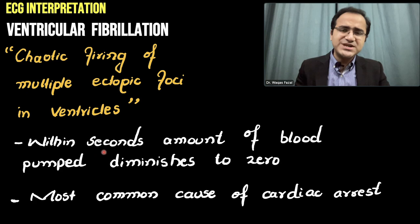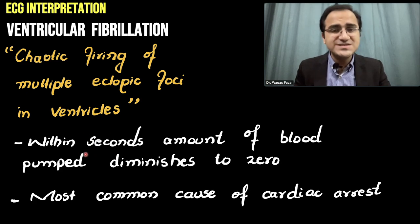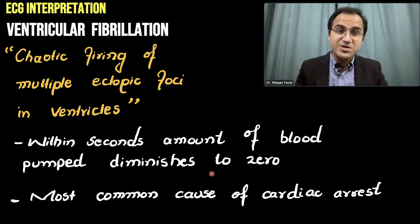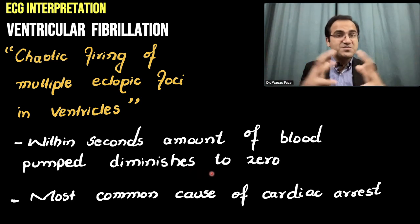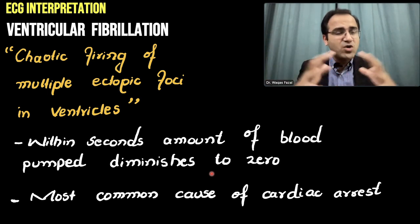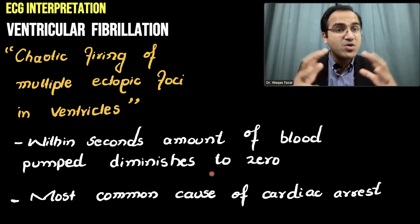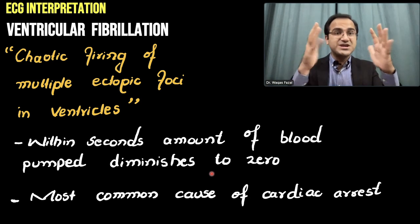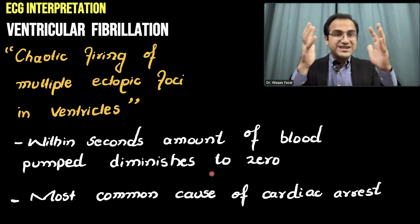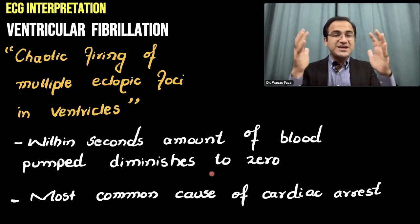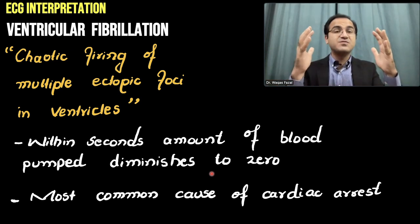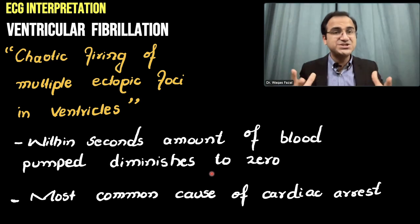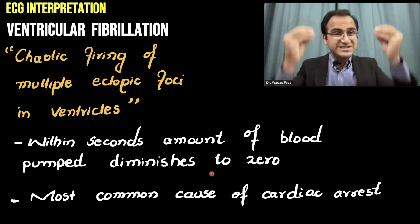As soon as the patient develops ventricular fibrillation, within seconds the amount of blood pumped to the body diminishes to zero. The heart was contracting normally in a synchronized manner, and all of a sudden these ectopic foci start generating abnormal electrical activity. The ventricles start seizing and are no longer contracting properly or pushing out blood from the heart. Therefore, cardiac output diminishes down to zero.